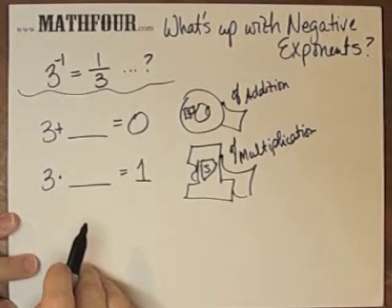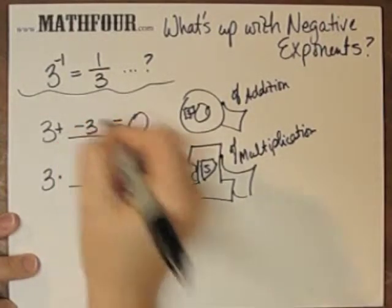3 plus what equals 0? 3 plus negative 3 equals 0.